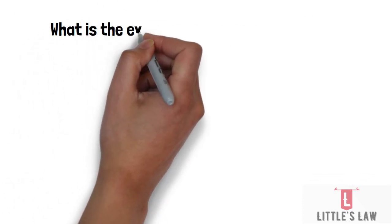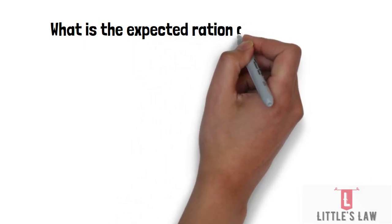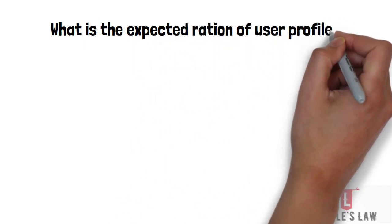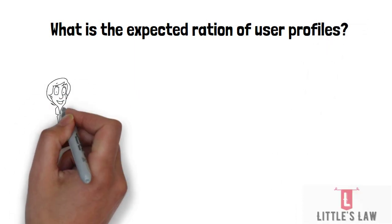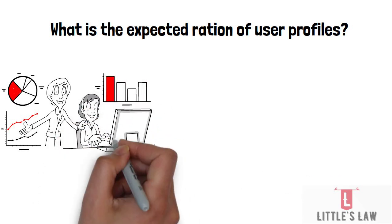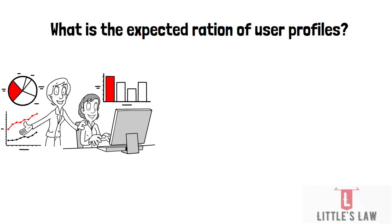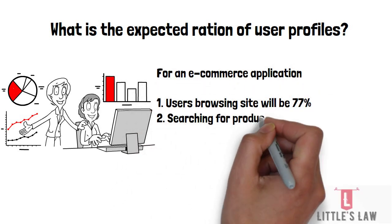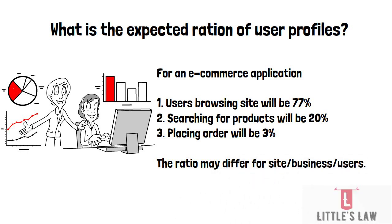The expected ratio of user profile scenarios is important when combining different profiles to create a more realistic simulation for scalability testing. The ratio of business actions performed by various profiles can be estimated or measured. For example, a typical e-commerce usage pattern could be 77% of users browsing, 20% searching for products, and 3% placing an order — based on a 3% conversion rate.